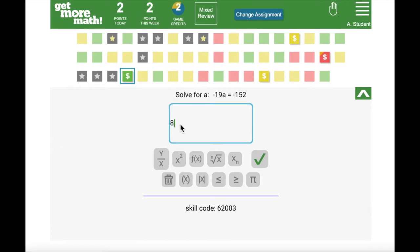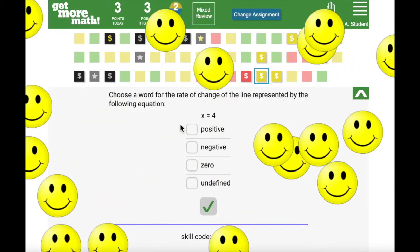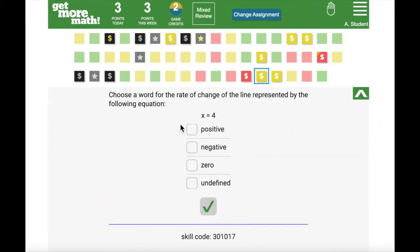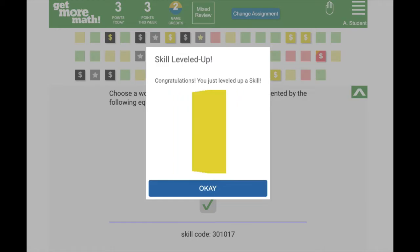After you do a problem and get it correct, Get More Math recalculates which skills get to have dollar signs on them. And it might even move that one that you just answered to a higher skill level by changing its color. Get More Math will also select a new skill for you to begin working on.